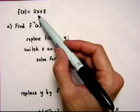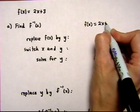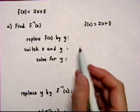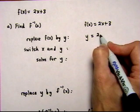We're going to start with the function itself, f(x) equals 2x plus 3. And then we're going to replace f(x) by y. y equals 2x plus 3.